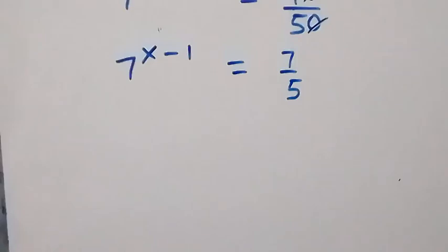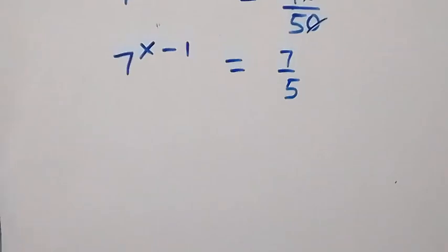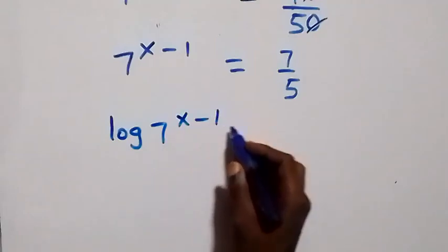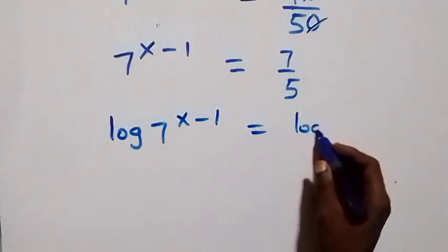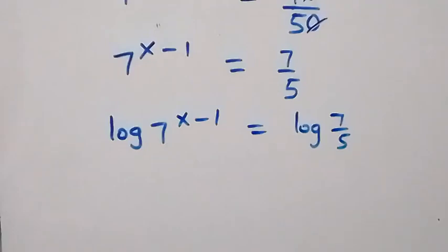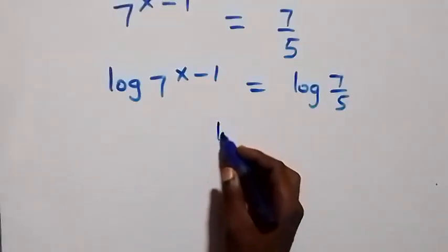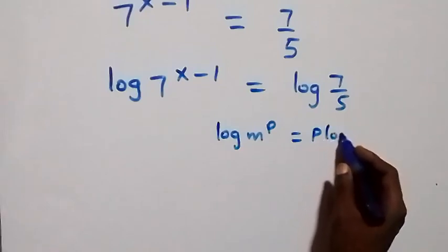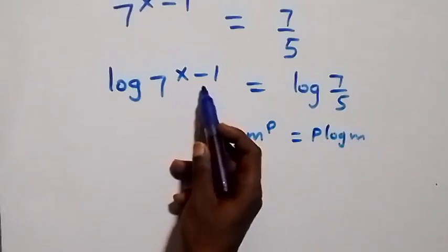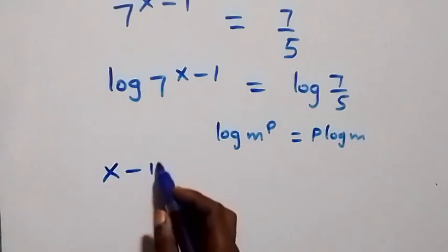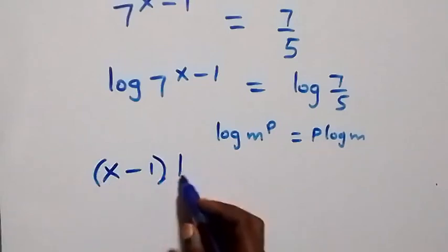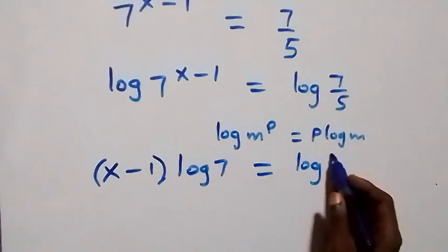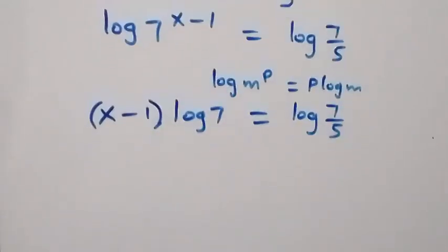The next step: we take the log on both sides. That is, log of seven raised to power x minus one equals to log of seven over five. From the power rule of logarithms, log m raised to power p is the same as p times log m. The power here is x minus one, so we have x minus one times log seven equals to log of seven over five.